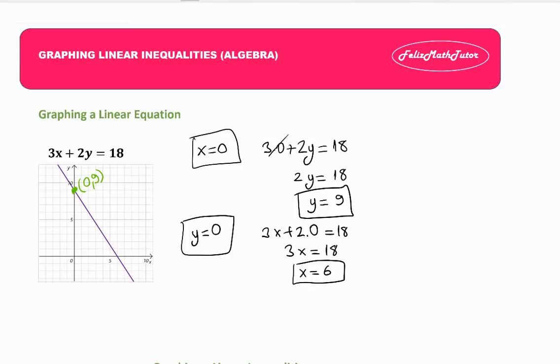When x equals 6 and y equals 0, I have 2 points. So I can graph my linear equation. It's already graphed, but I will show you again.